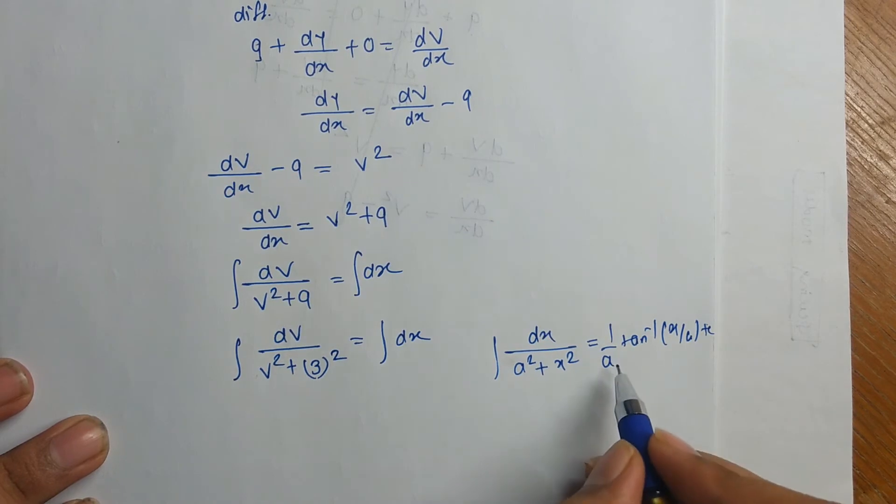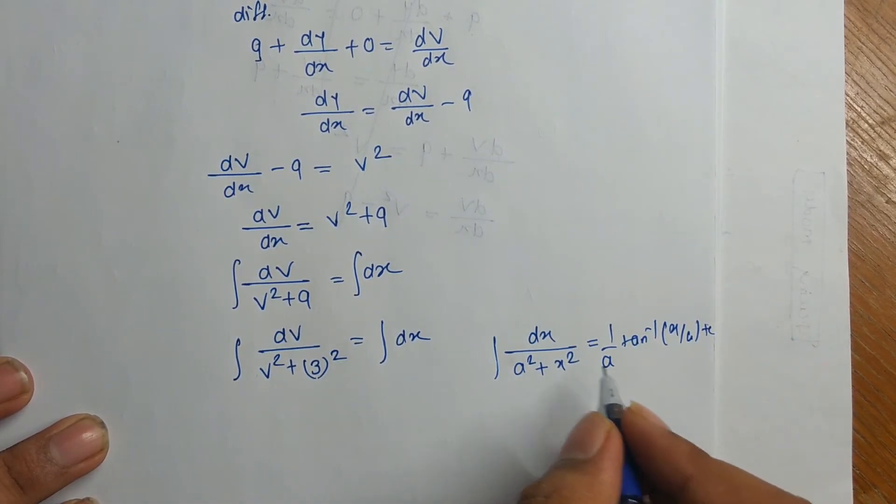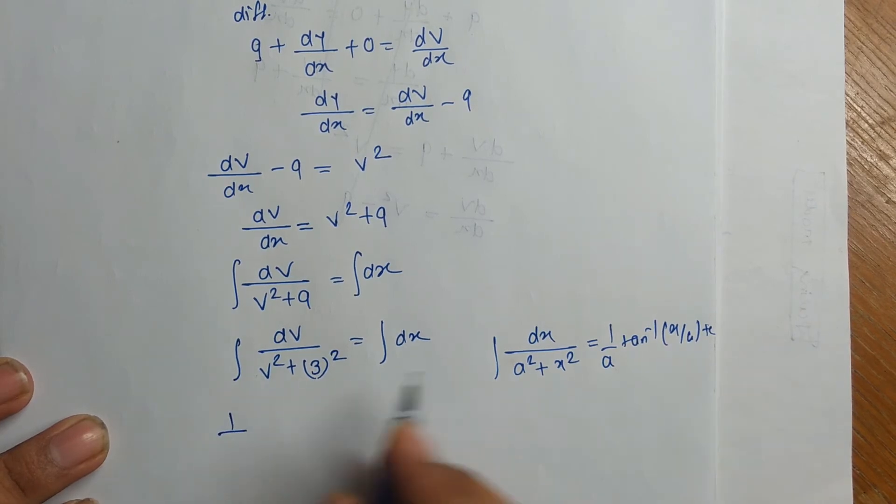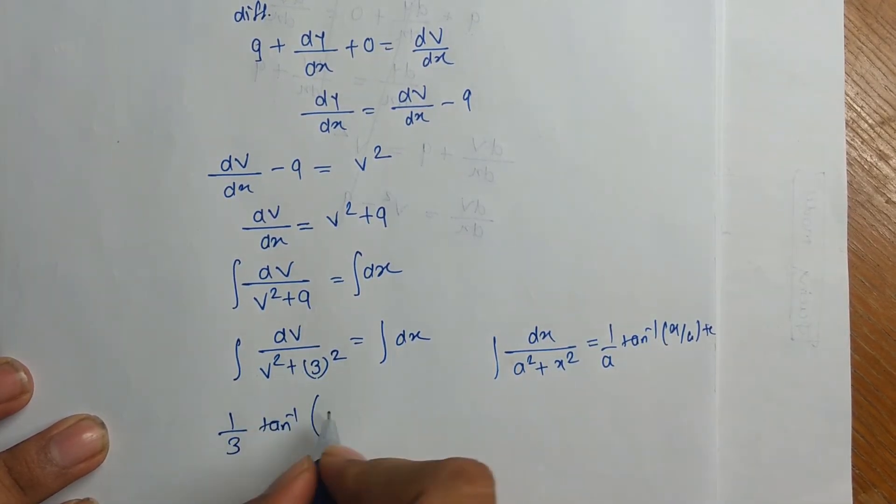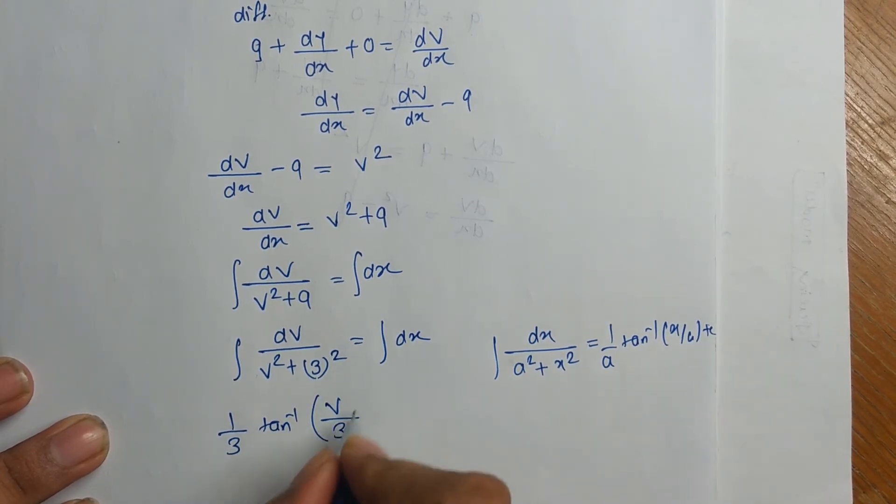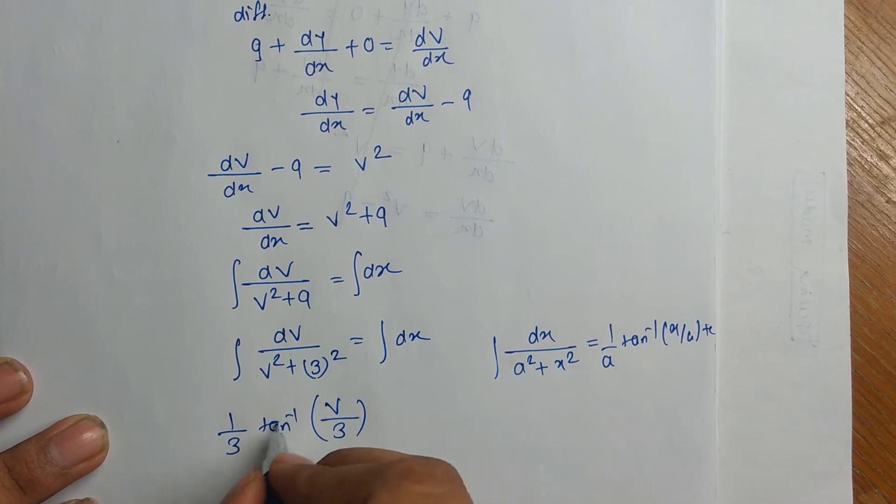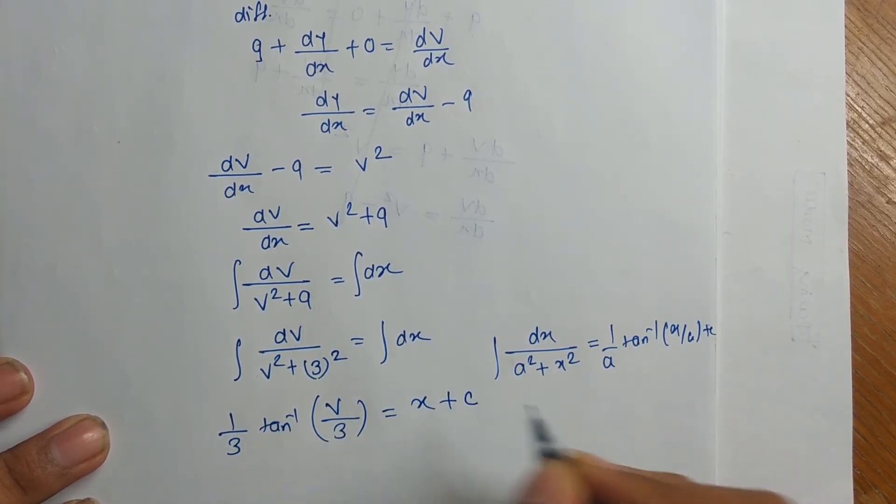Here we have to substitute here. That will our equation becomes, solution becomes. 1 by a means here is a is 3. 1 by 3 tan inverse of x. What is x? Here is v. And a is the 3. In place of v by 3 equal to dx will be x and plus c.